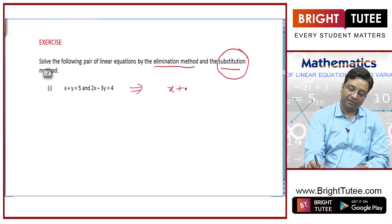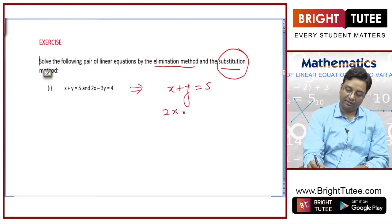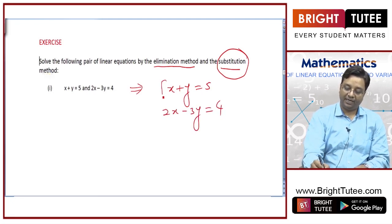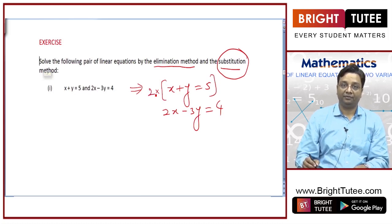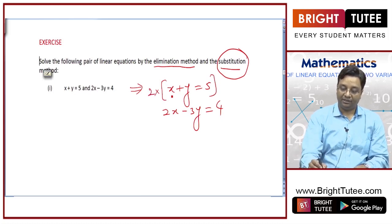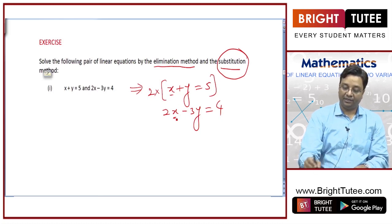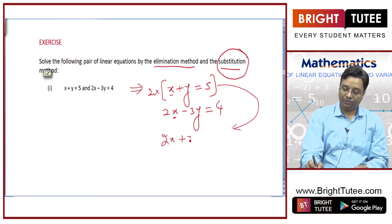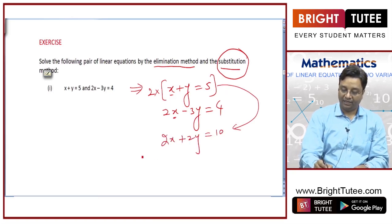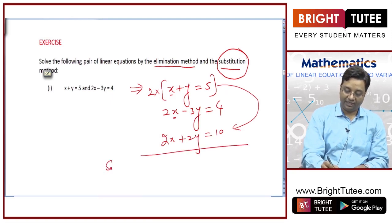So, x plus y is equal to 5 and 2x minus 3y equals 4. Multiplying equation number 1 by 2 on both sides. Why? Because the coefficient of x will get equated. So, this will give me 2x plus 2y equals 10, and then subtracting.